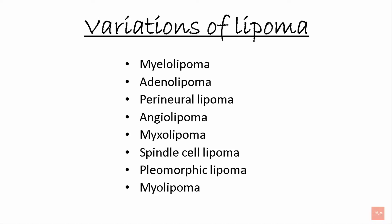Variations of lipoma derive their names from the location and cells present along with the lipoma. These include: myelolipoma, adenolipoma, perineural lipoma, angiolipoma, myxolipoma, spindle cell lipoma, pleomorphic lipoma, and myolipoma.